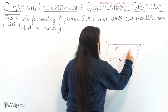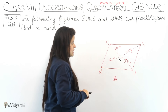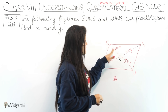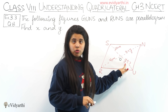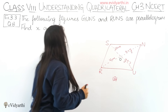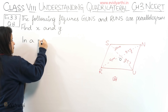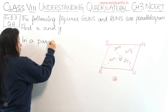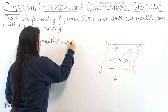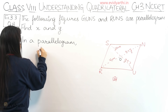So ON is X plus Y, and OR is 16 centimeters. Similarly, OS is 20 and OU is Y plus 7. Now again we know that in a parallelogram the diagonals bisect each other.